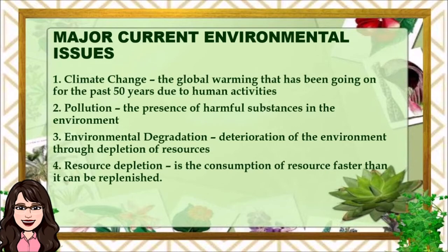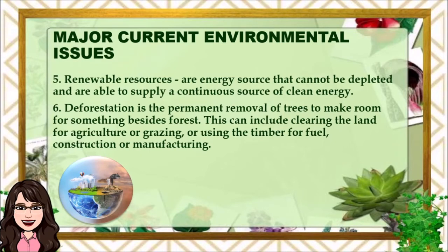Resource depletion means resources are used up faster than they can be replaced. Number five, renewable resources — energy sources that cannot be depleted and are able to supply a continuous source of clean energy. Number six, deforestation — the permanent removal of trees to make room for something besides forest. This can include clearing land for agriculture or grazing, or using the timber for fuel, construction, or manufacturing.